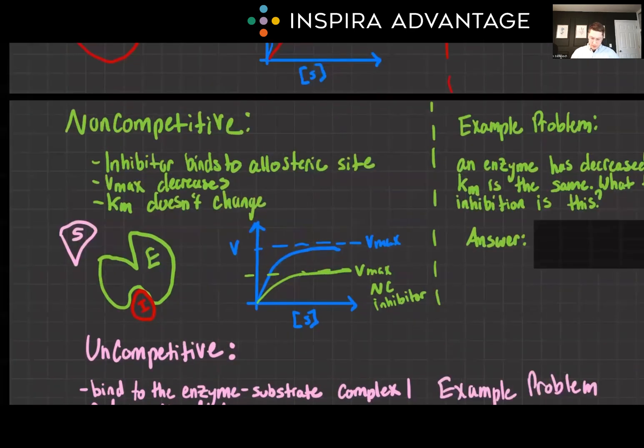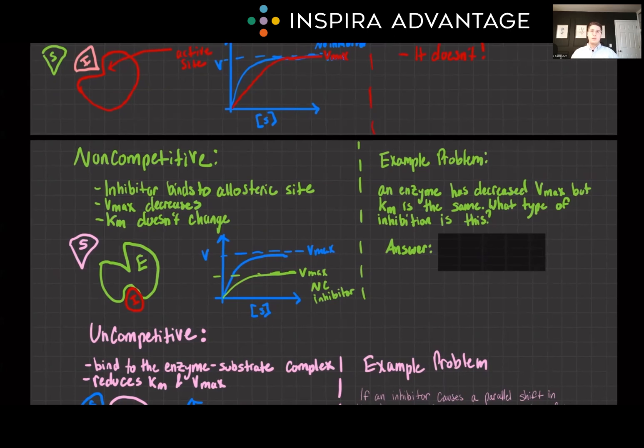Let's do an example problem. An enzyme exhibits a decrease in VMAX in the presence of a certain molecule, but the KM remains the same. What type of inhibition will this be? Well, if you've been paying attention, you'll know right away that this is a non-competitive inhibitor.